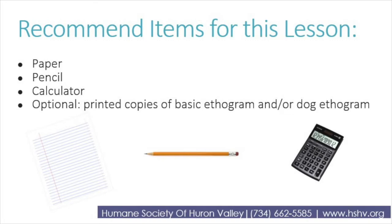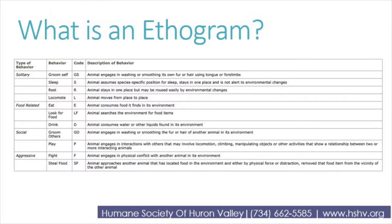So what is an ethogram? The ethogram itself is just a detailed list of behaviors. This is an example of an ethogram from an actual research project. It lists the type of behavior, what the behavior is, a code for the researcher to quickly jot it down, and a detailed description of the behavior.